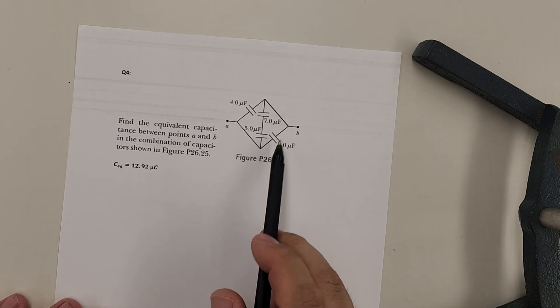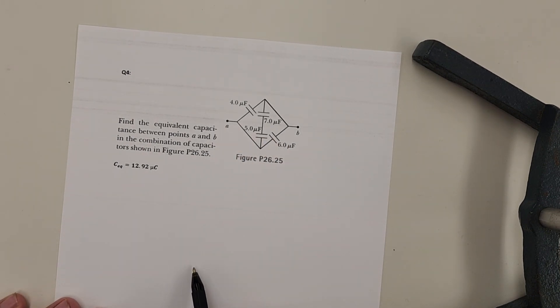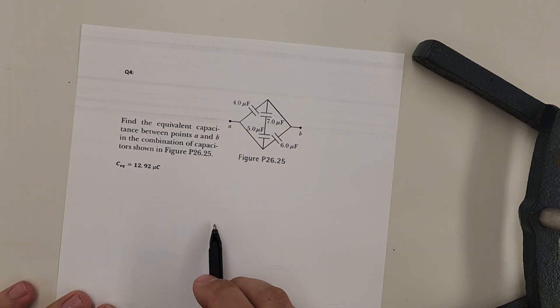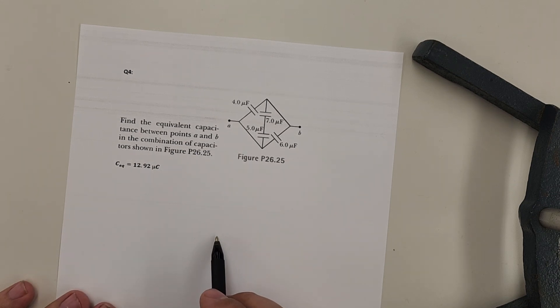Question four, we have this triangular diamond-shaped capacitor circuit, and again, we are looking for equivalent resistance, or equivalent capacitance.